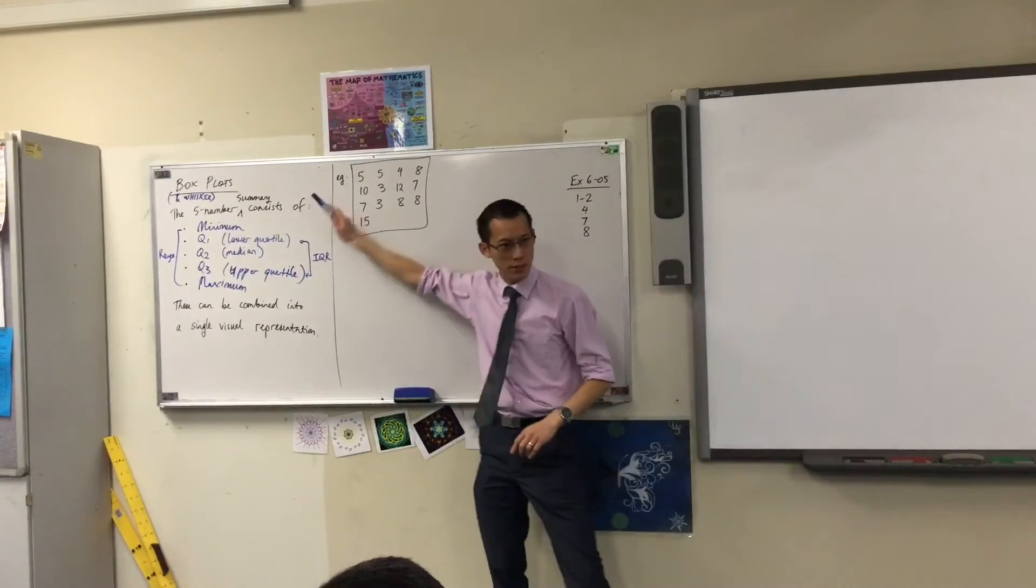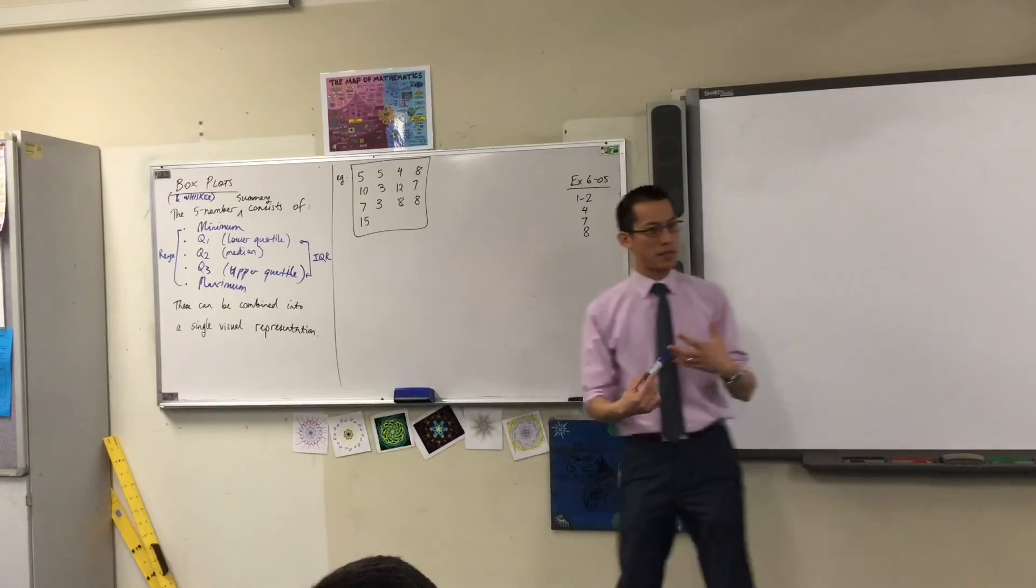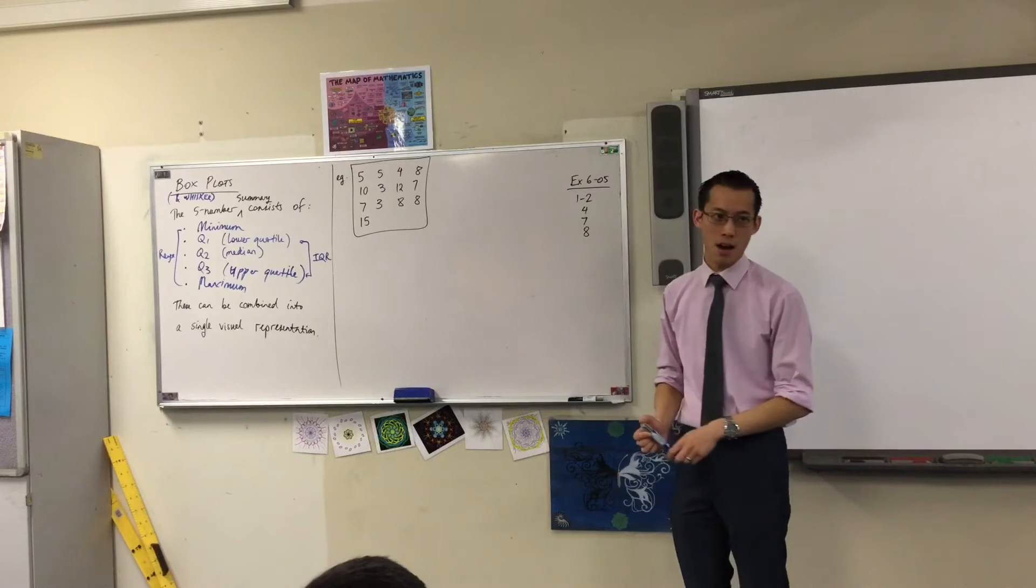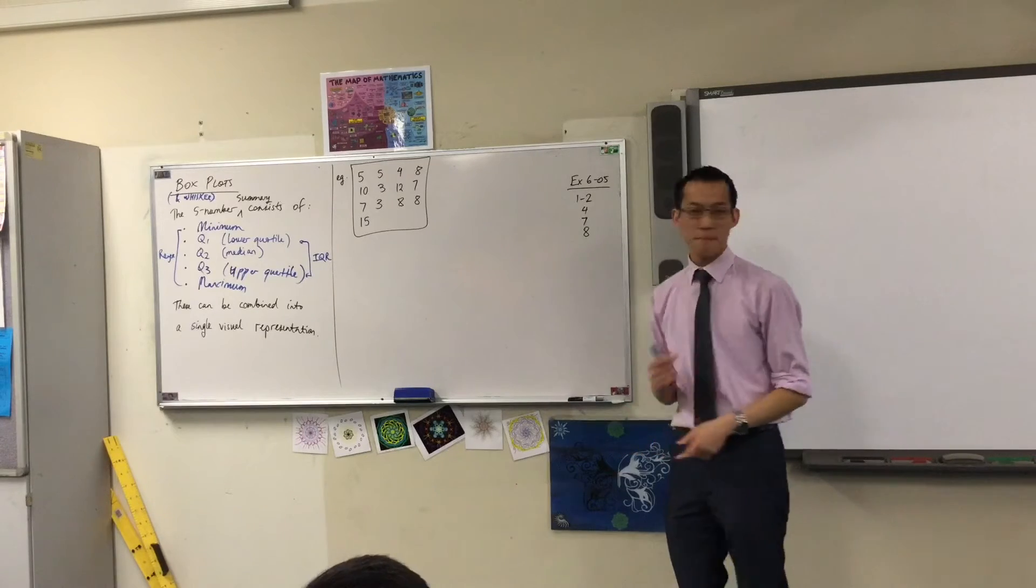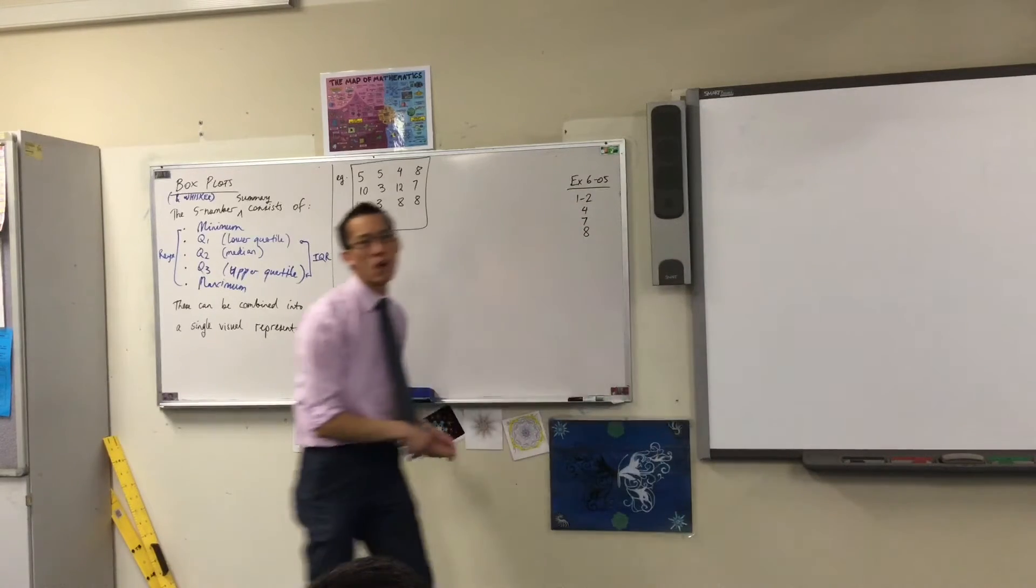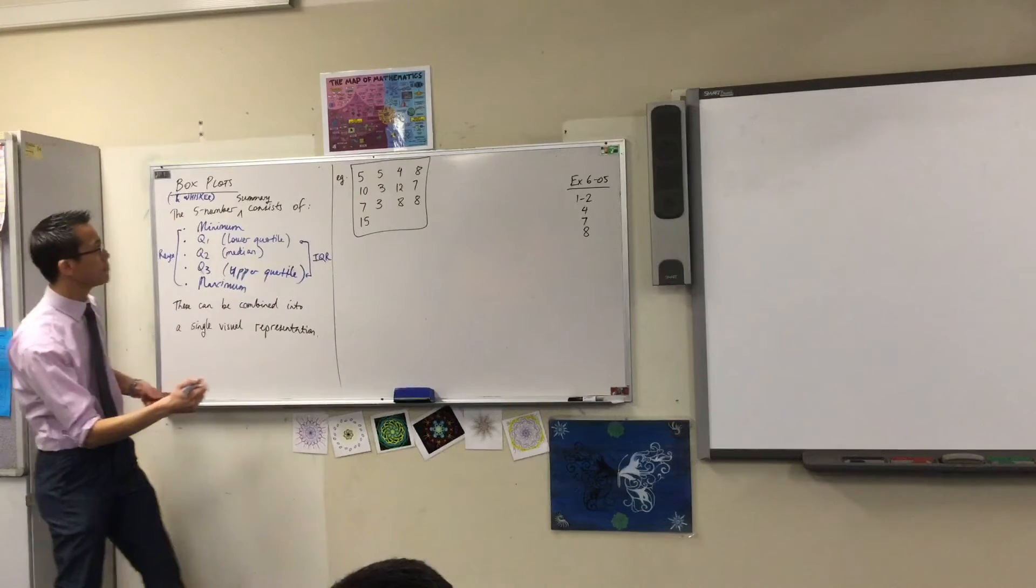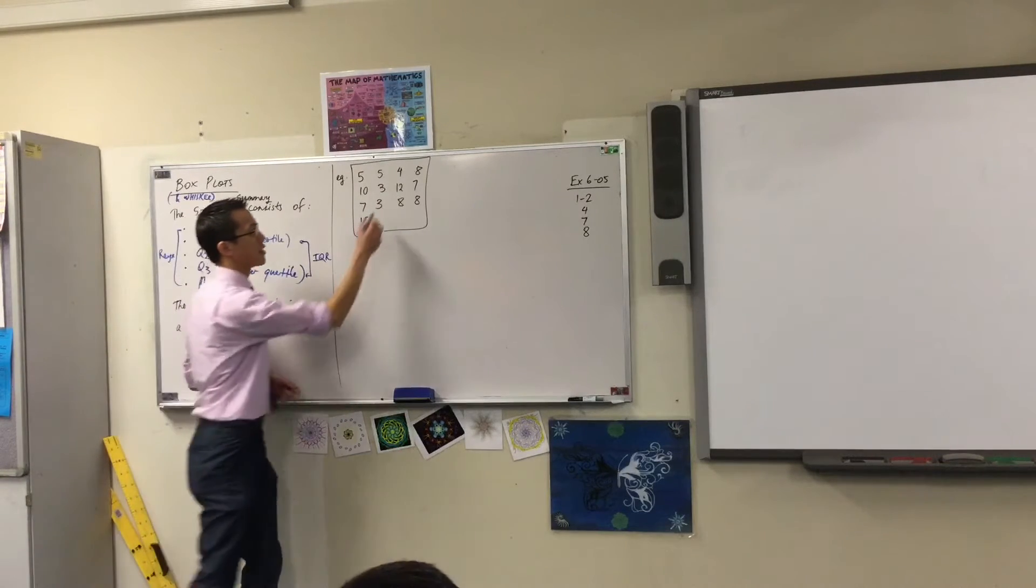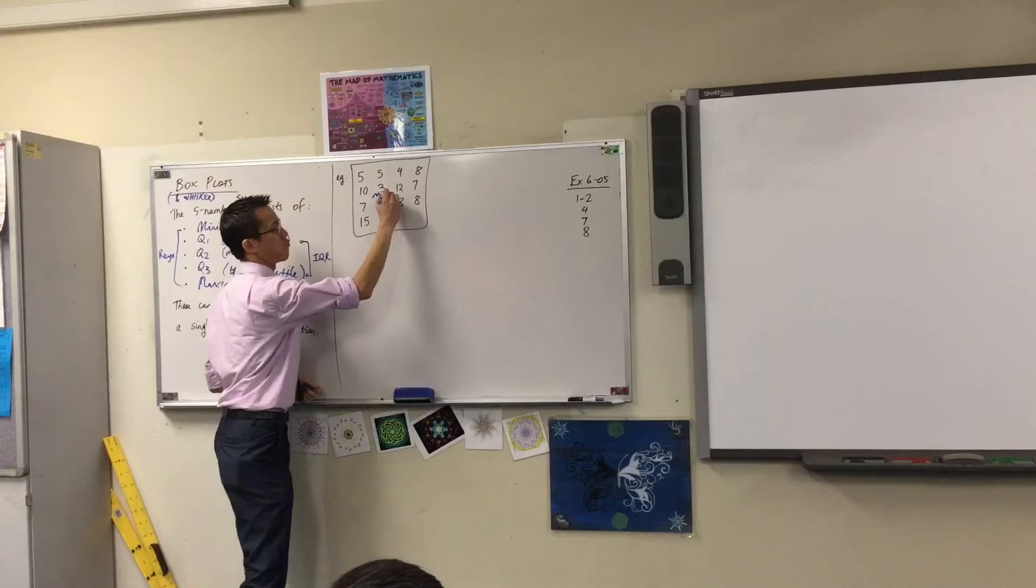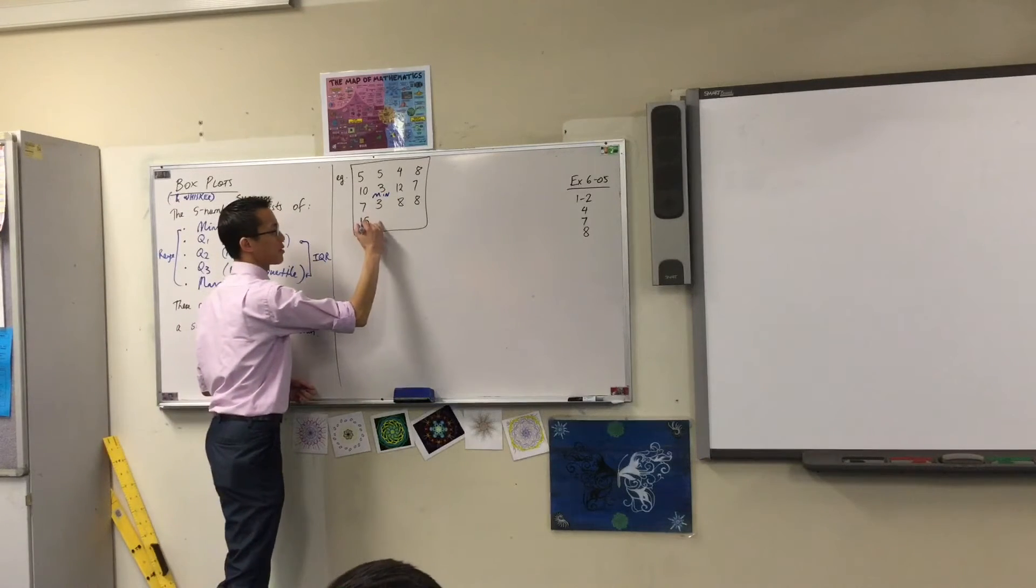The first thing you've got to do in order to get to a box plot or a box and whisker plot is, you need to know these five numbers. Some of the bits are easier to see and some bits are harder. For example, minimum and maximum, you can state them for me right now. What are they? There's the minimum, right there, and three, and 15 is the max.